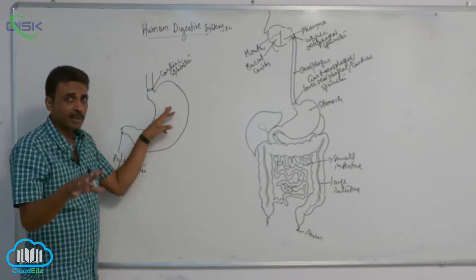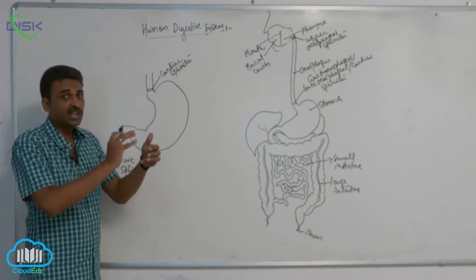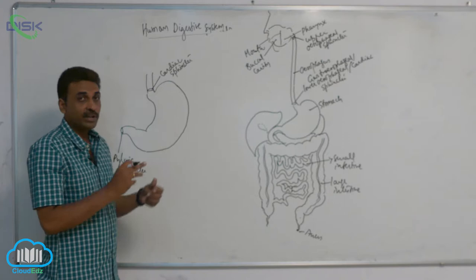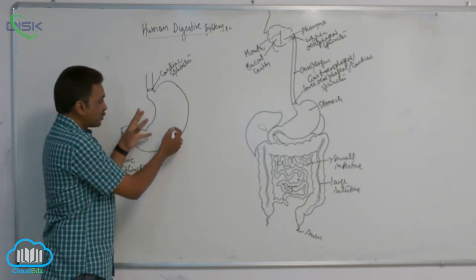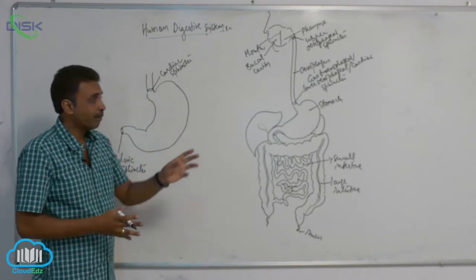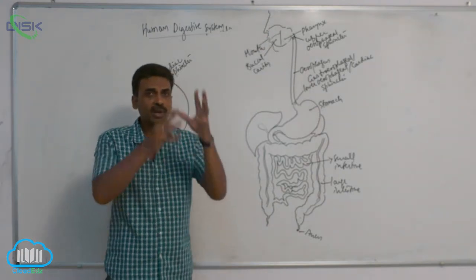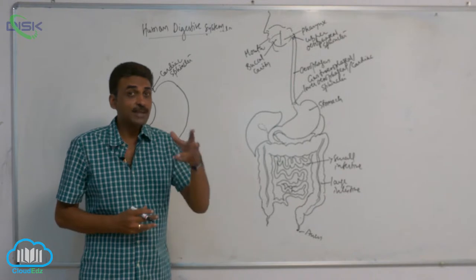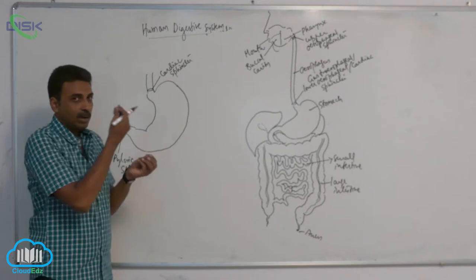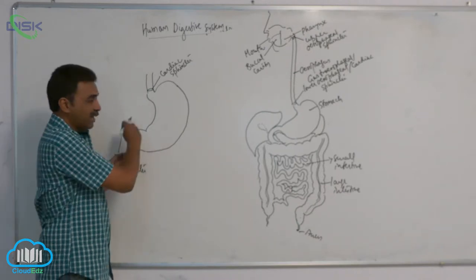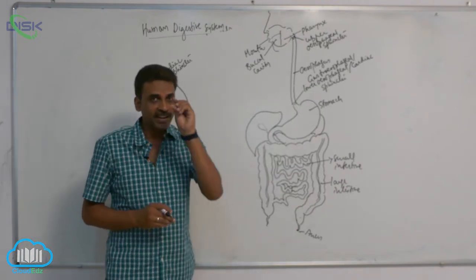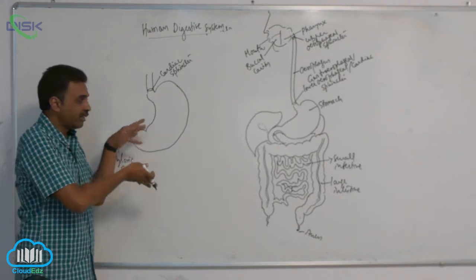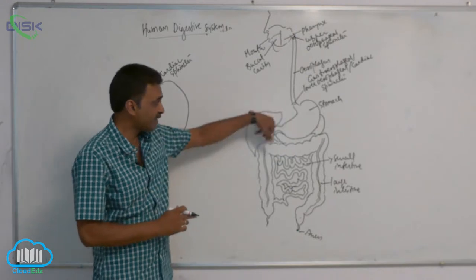Food stays in the stomach for three to four hours and is partially digested there, becoming acidic. The food is not pushed out at the same speed it enters — food comes into the stomach rapidly, but it leaves into the intestine in small quantities. The intestine is very narrow and can accommodate only small quantities. Whenever the pyloric sphincter opens, small quantities of food enter the small intestine. So there is a difference between the functions of both sphincters.